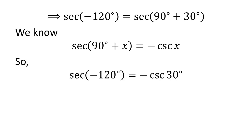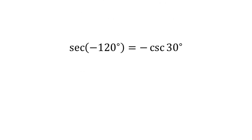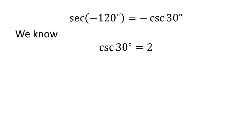Let us apply the above identity for secant of minus 120 degrees. Here, x is 30 degrees. So secant of minus 120 degrees is equal to minus cosecant of 30 degrees. We know the value of cosecant of 30 degrees is equal to 2.